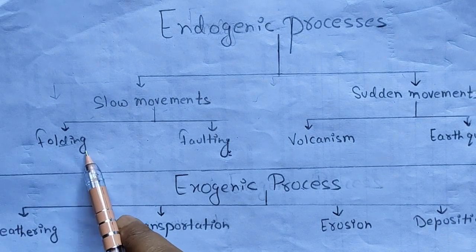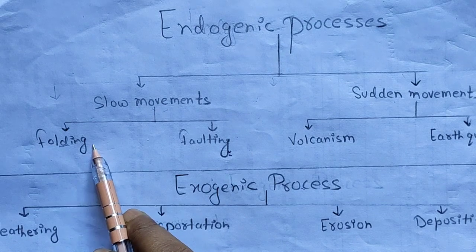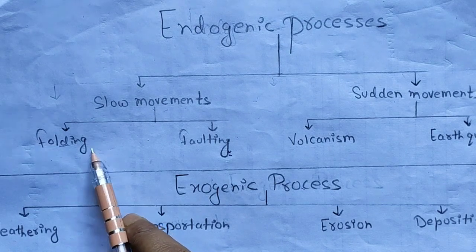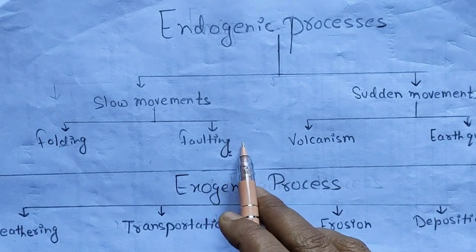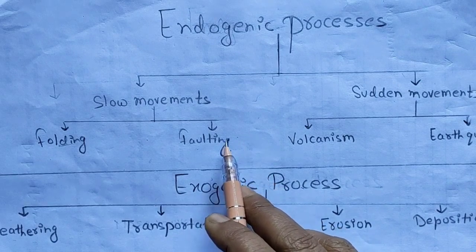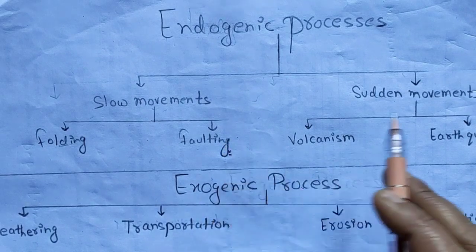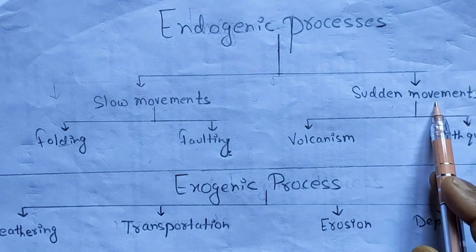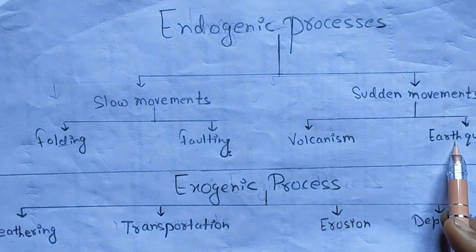Folding is the phenomenon where two tectonic plates of the earth converge. Faulting is where cracks in the earth's rocks are created because of the different movement of tectonic plates. Sudden movements include volcanism and earthquakes.